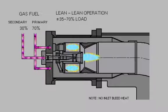When operating on gas fuel, the lean-lean operating mode is from approximately 35% to 70% load and a combustion reference temperature range from 1600 degrees Fahrenheit to 1875 degrees Fahrenheit. Fuel is supplied to and combustion takes place in both the primary and secondary zones. Approximately 70% of the fuel gas is supplied to the primary nozzles, while the remaining 30% is supplied to the secondary nozzles.